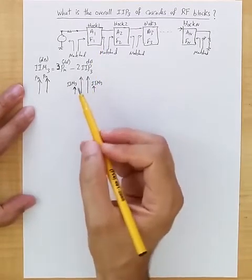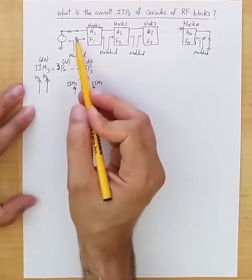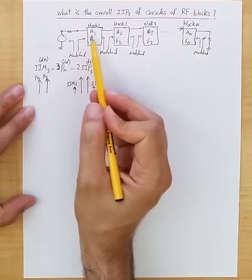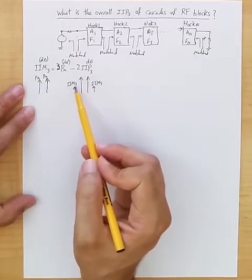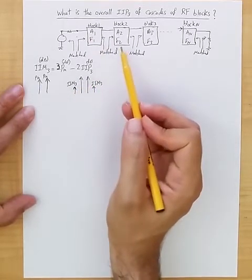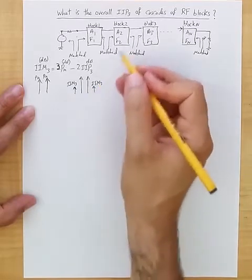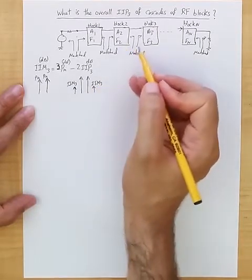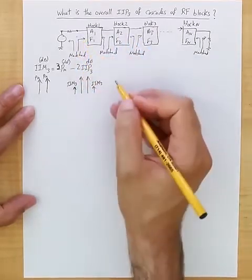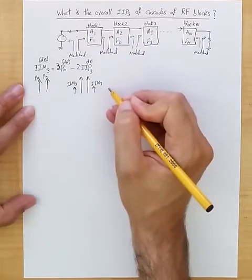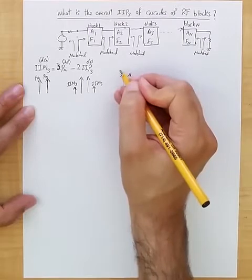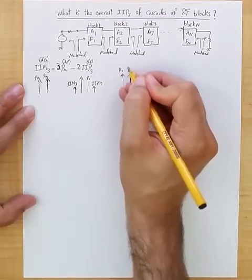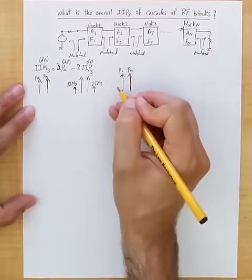So the thing is, when two tones are applied at the input of this cascade, as it goes through different blocks it generates different IIM3 corresponding to each of the blocks. So let's say when this passes through block two and then it's input referred back to the very input, what we see is at the very input we have still the two main tones that we applied for test with the power Pn, Pn.